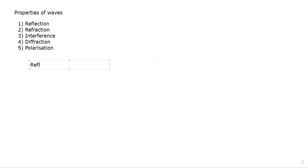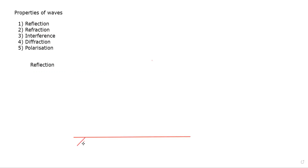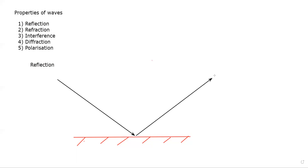The first property is reflection, which we discussed yesterday — I gave you an overview of this. The term reflection refers to when the wave strikes the surface and bounces back, changing direction. The wave which strikes the surface is known as the incident wave. The wave which bounces back after striking a surface is known as the reflected wave. The imaginary line perpendicular — or 90 degrees — to the surface is known as the normal.